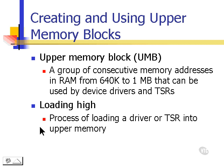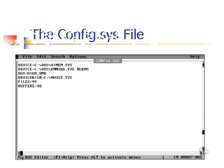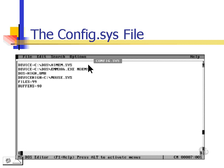We force the device drivers to load high by using a config.sys file. In the config.sys file, we type 'device=c:\dos\highmem.sys' — that has to be the first line in the file. The second line will use the emm386 file, typing 'device=c:\dos\emm386.exe' followed by the no expanded memory switch. We can also use the autoexec.bat file.